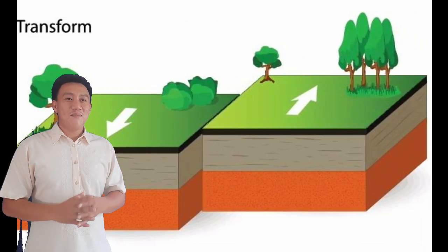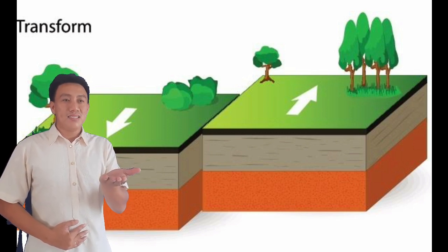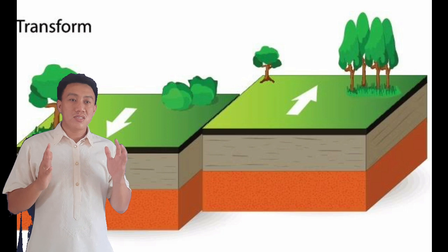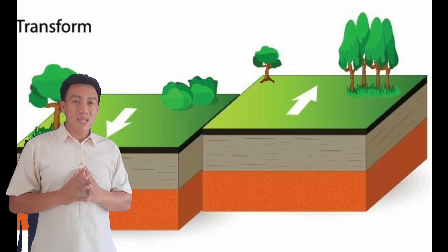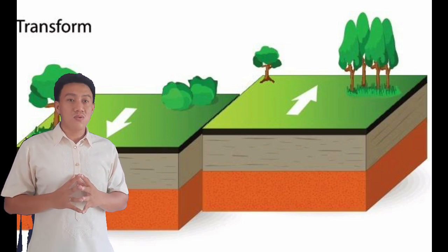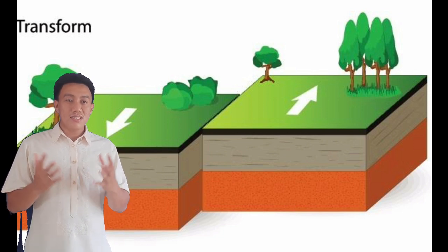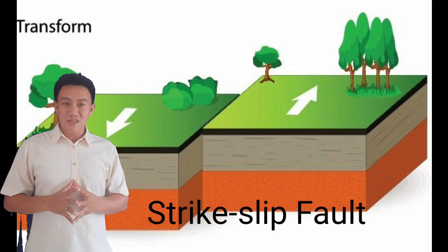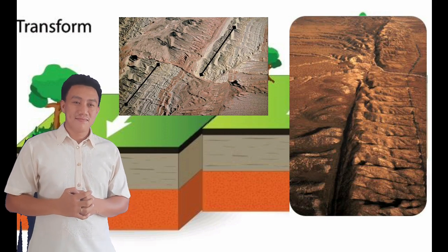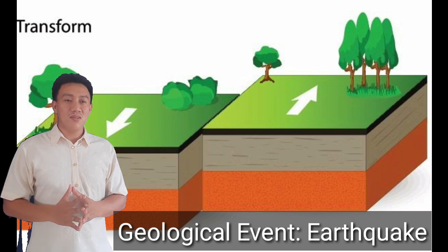The third type of plate boundary is the transform fault boundary, where plates slide past one another without the production or destruction of crust. Rocks are cut and displaced by movement in opposite directions. Rocks facing each other on two sides of the fault are typically of different type and age. These structures are called strike-slip faults. The geological event of this process is only earthquake.